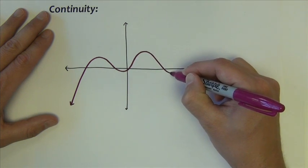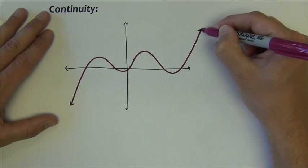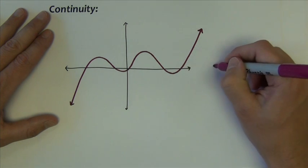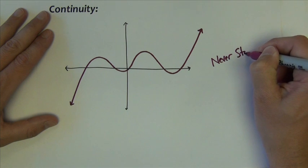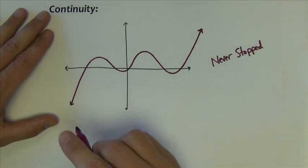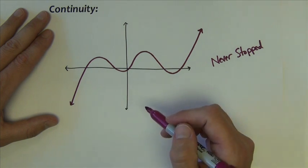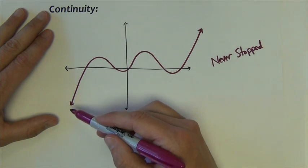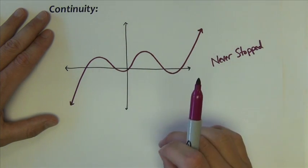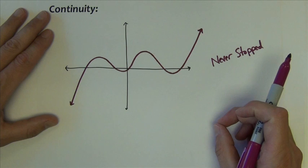I can do all sorts of things in here. But notice that all the while I drew it, I never stopped and I never had to pick up the pencil and restart somewhere else. The arrows indicate that this is going to go on forever to the right and forever to the left. So what we're looking at is a continuous function, a nice, smooth, continuous curve.